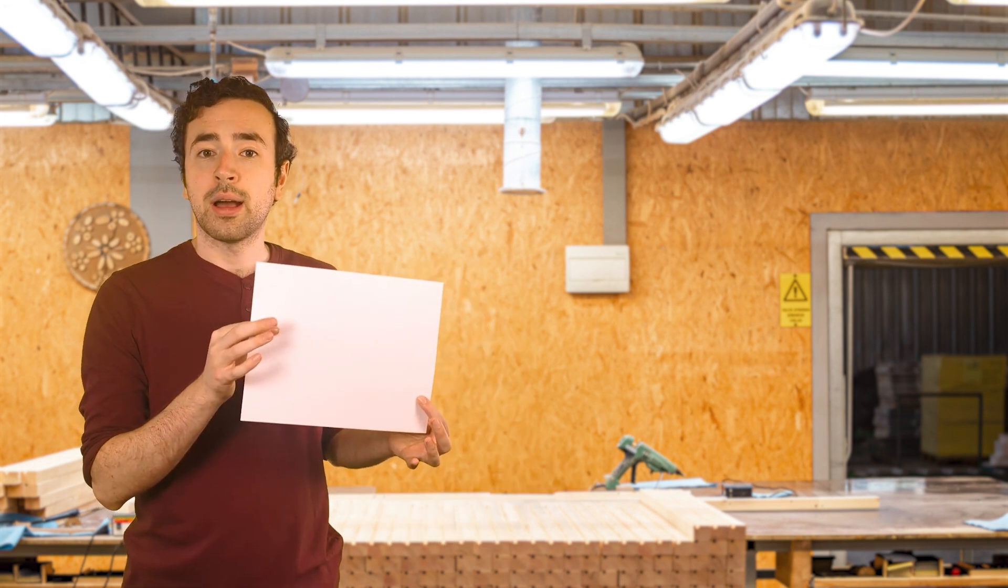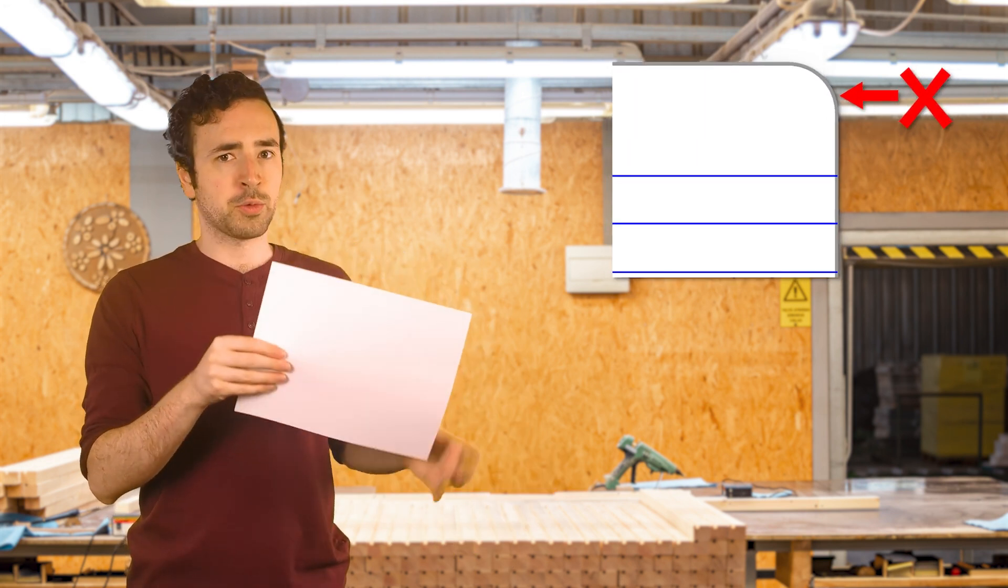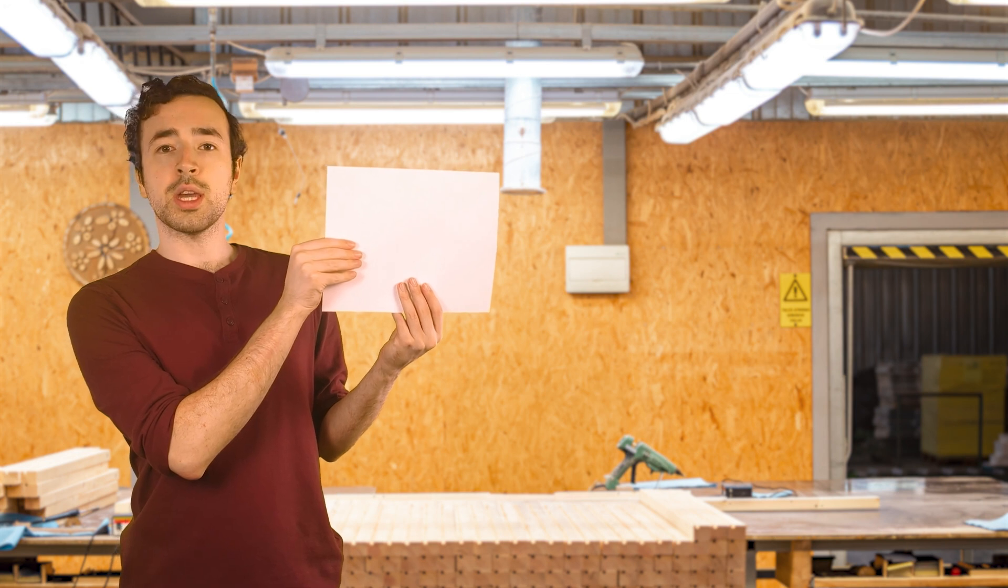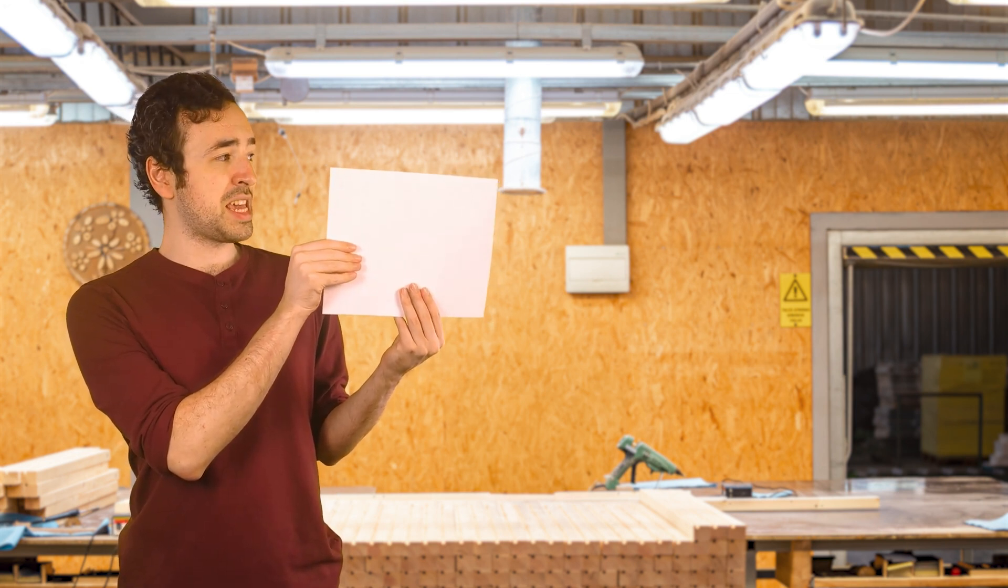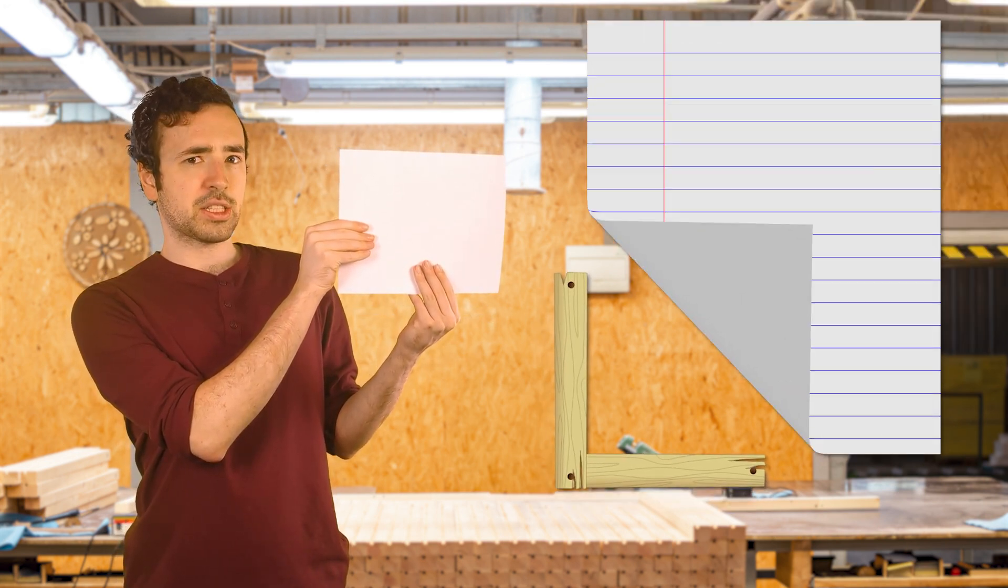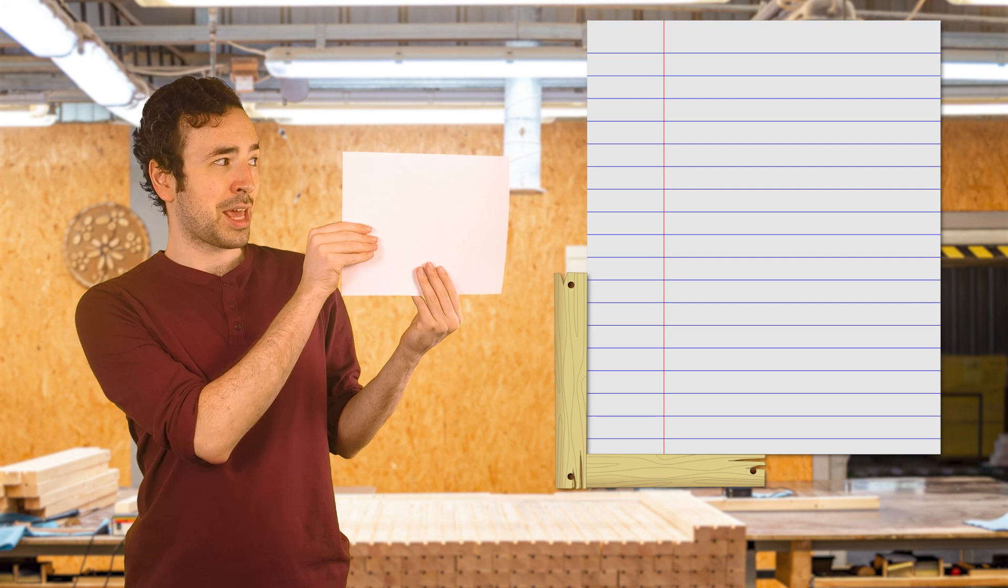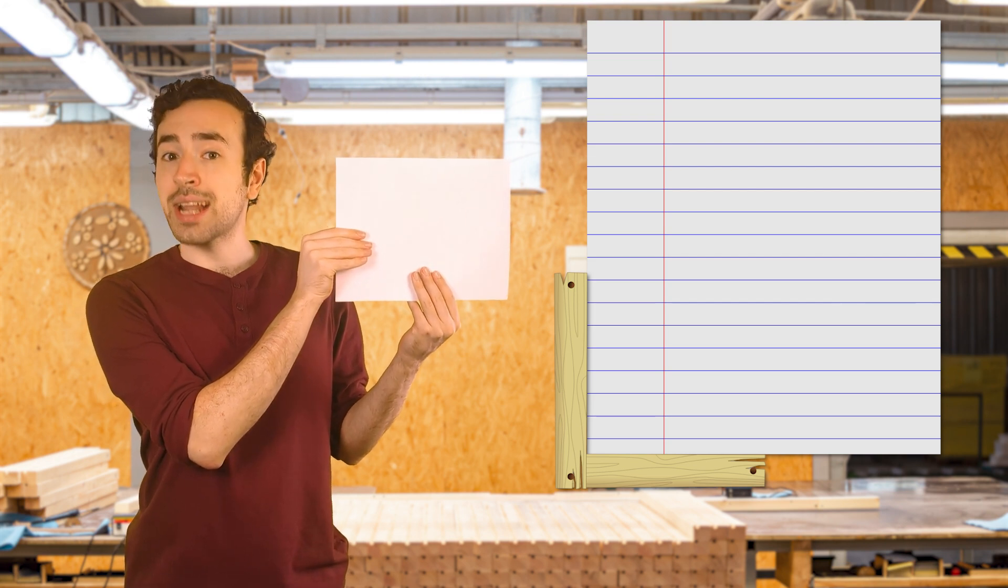Right angles are easy to spot using a common tool, a sheet of paper. Just make sure that it has sharp corners, not round ones. Simply hold the corner of your paper up to the angle. And if it fits perfectly, it's a right angle measuring 90 degrees.